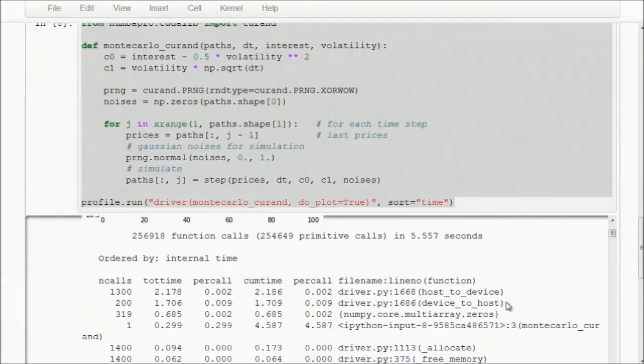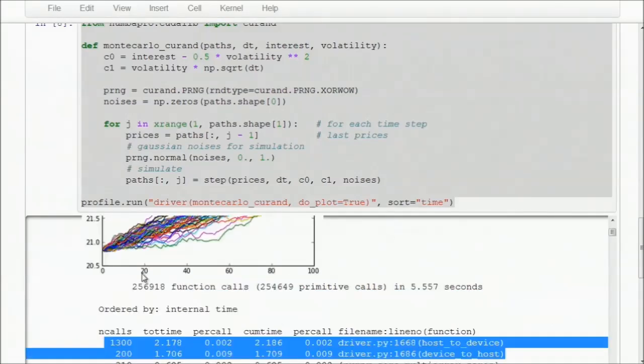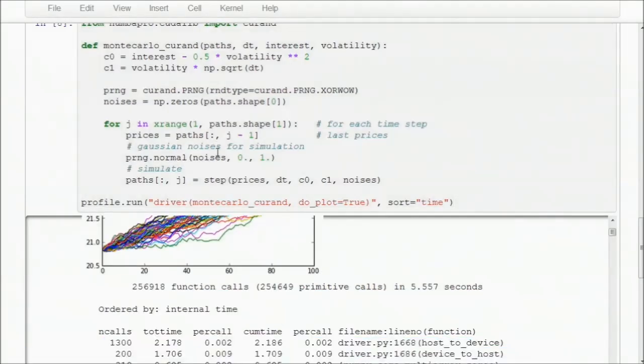We can also see we are now spending most of our time transferring data back and forth between the host and the device, consuming almost all of our application time. If you look in more detail at what the curand function call is doing, we're actually transferring the noises array to the GPU, filling it with random data, transferring it back to the host, and then when we call the step function, we're copying the array back to the GPU yet again. That's a lot of wasted data movement. We'd rather just keep the data on the GPU the entire time, as there's no need to move the random noises data back to the host side.